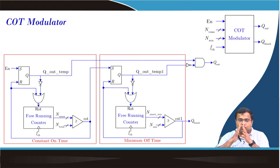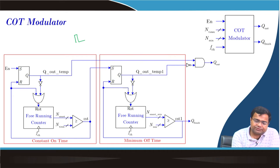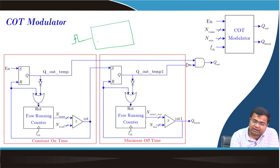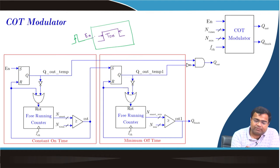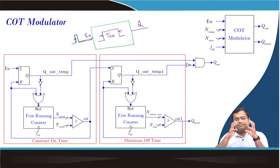We want to show the basic concept of the constant on-time modulator. Suppose we have a trigger pulse coming from a comparator; this trigger pulse goes to a monoshot timer, which has an on-time T_on. When you trigger this — considering the enable signal — whenever the enable high edge comes to the clock, this will generate a Q signal which will be high for this fixed duration. After this fixed duration is over because it has a timer, once the T_on counting is over then Q will go low.